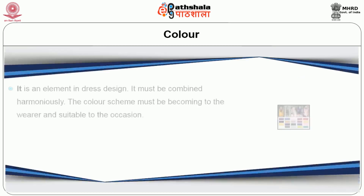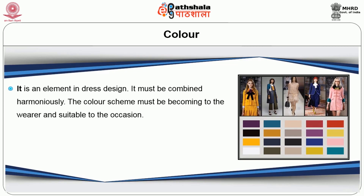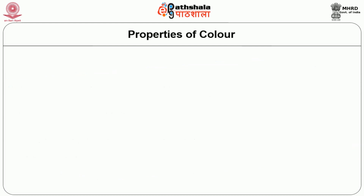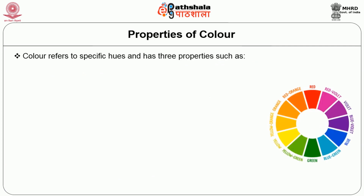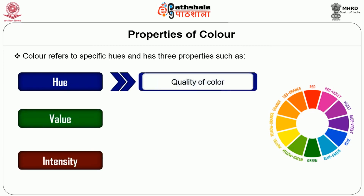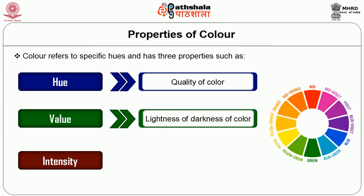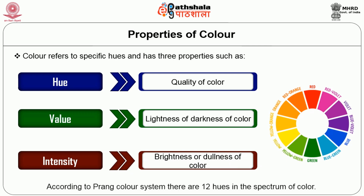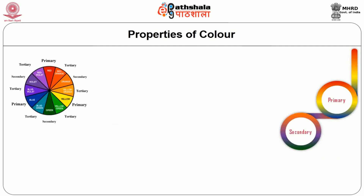Let us see the fifth element of design, that is color. Color is an element in dress design and must be combined harmoniously. The color scheme must be becoming to the wearer and suitable to the occasion. Color has the power to attract or repel. Several color systems are in use today, though the Prang theory of color system is used extensively. Color refers to specific hues and has three properties: hue, intensity and value. Hue indicates the name or quality of color. Value indicates the lightness or darkness of a color. Intensity indicates the brightness or dullness of a color. According to the Prang color system, there are 12 hues in the spectrum of color. The color wheel is made up of primary colors, secondary colors and intermediate colors. Primary colors such as red, blue and yellow cannot be created by mixing any other colors together.